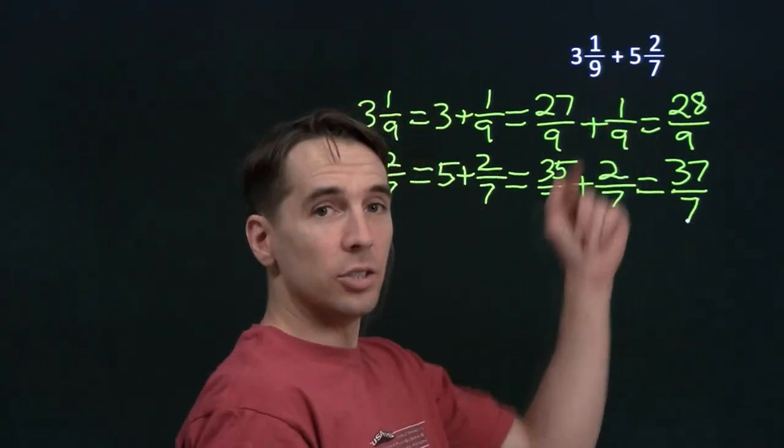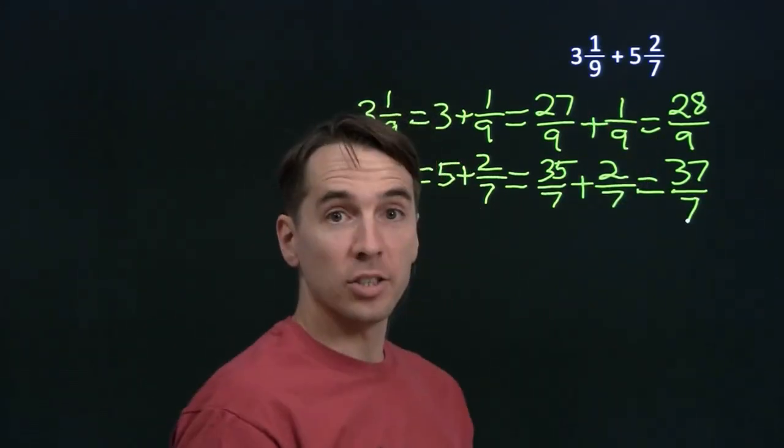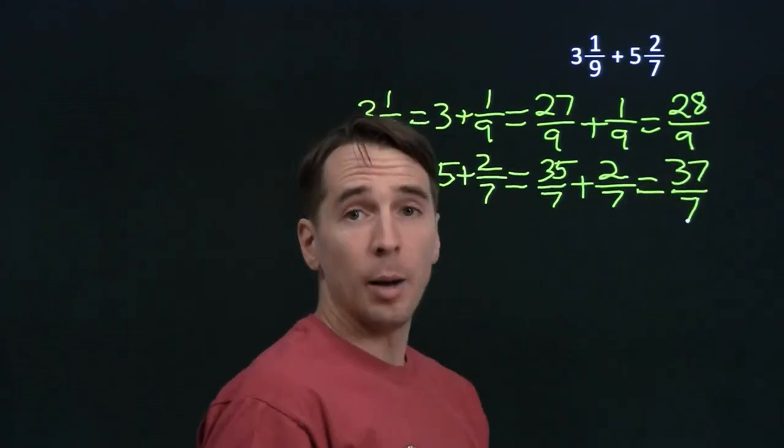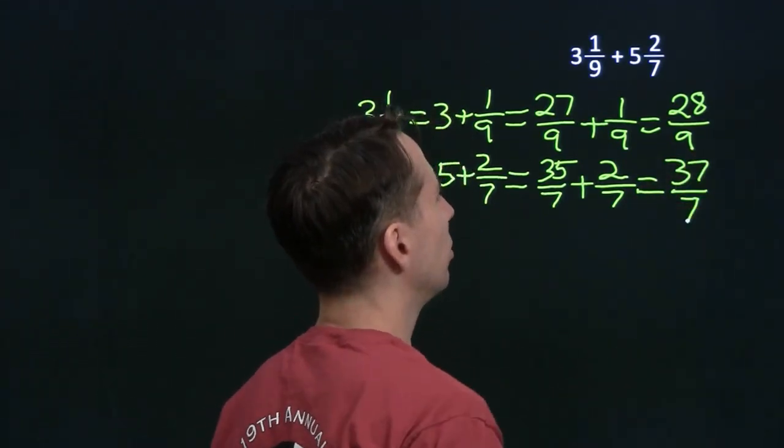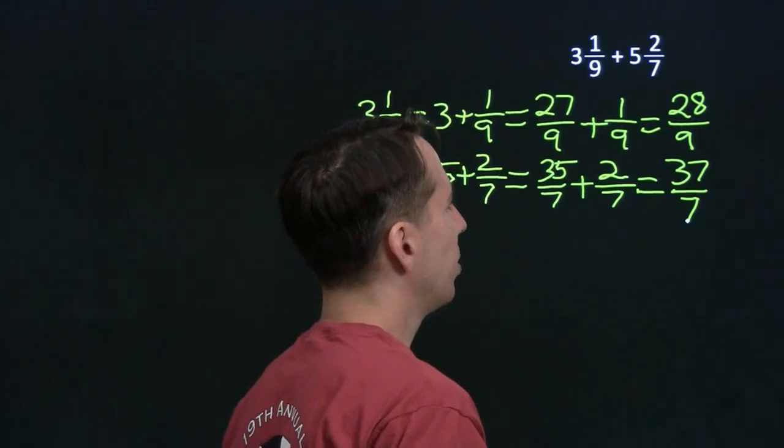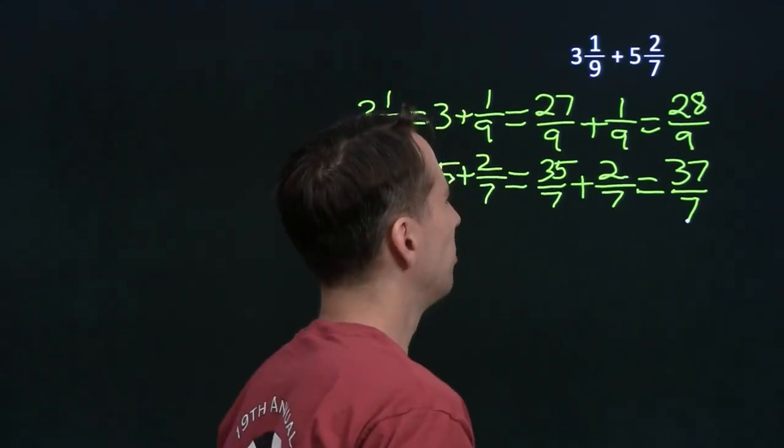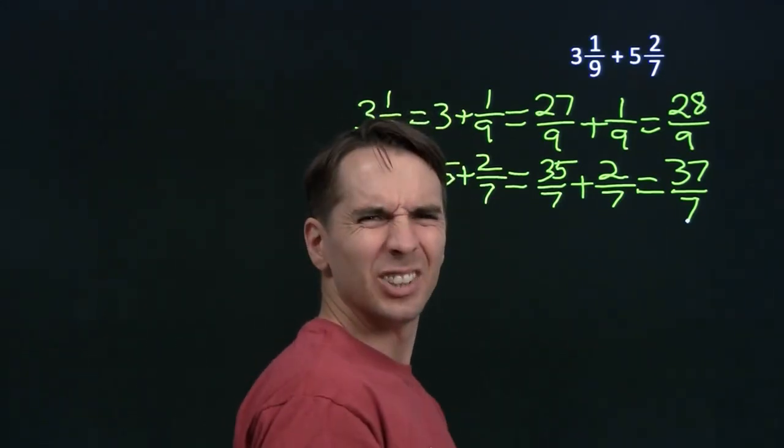So to add these two, we add these two fractions here. That means we're going to have to get a common denominator. Common denominator is going to be 9 times 7, so we're going to have to multiply 28 by 7 and multiply 37 by 9. That sounds like a lot of work.